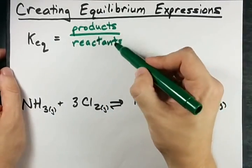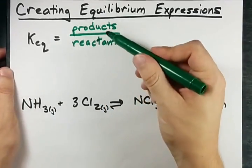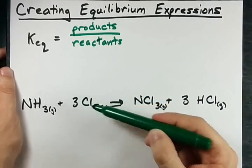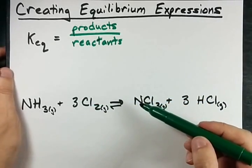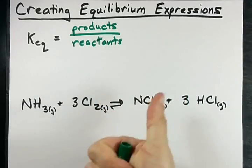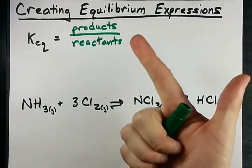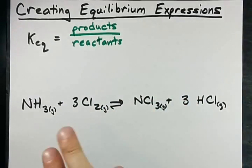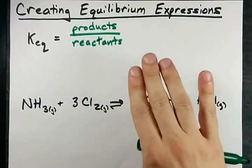The exponents on each of the concentrations is the coefficient from the balanced chemical equation and you'll only include things that are AQ, aqueous, or G for gas. Solids and liquids are never included.